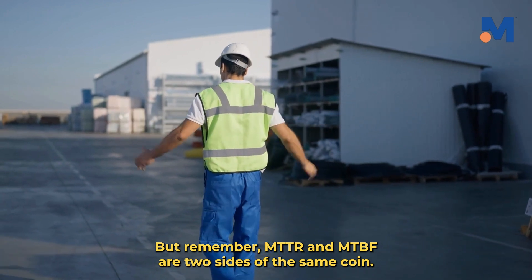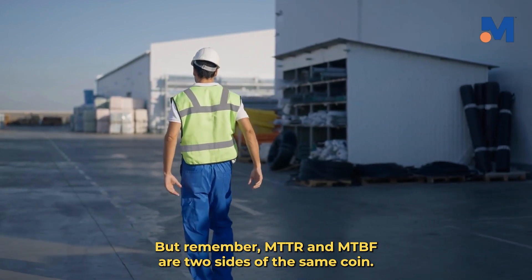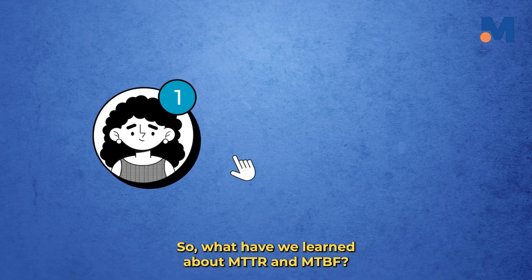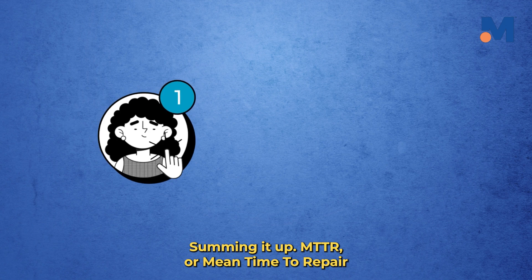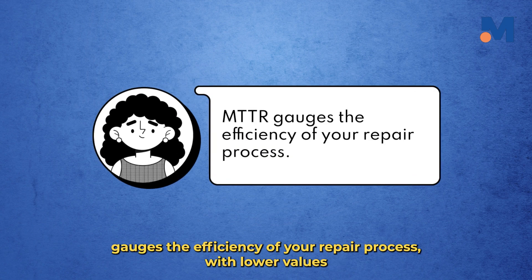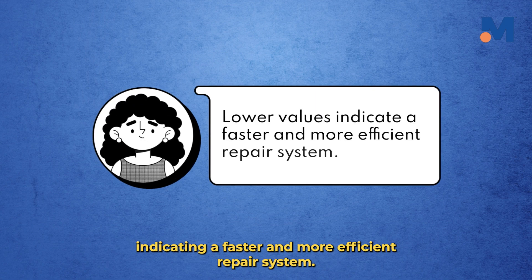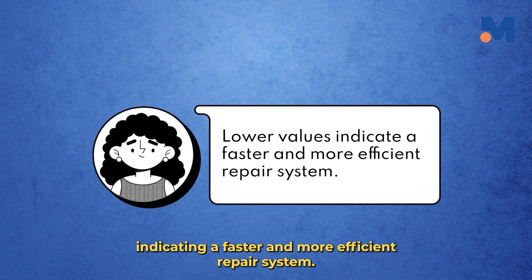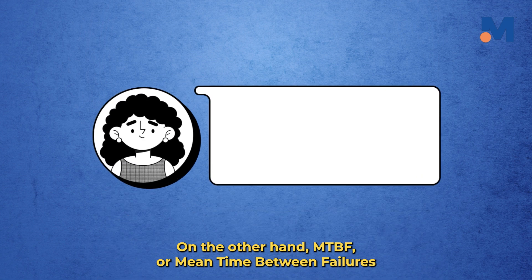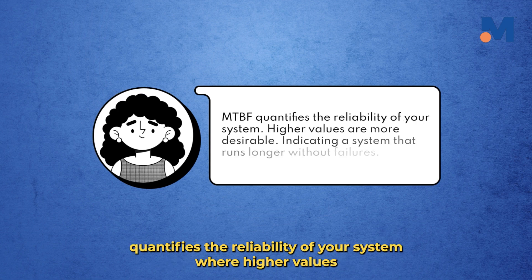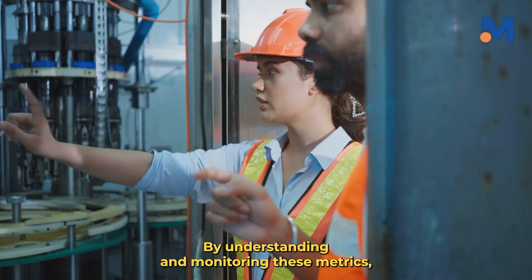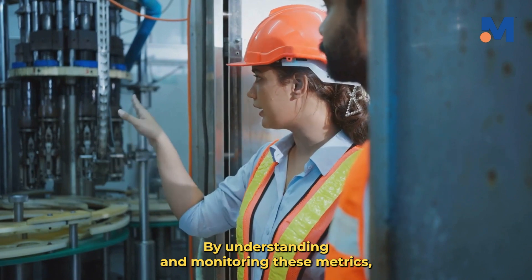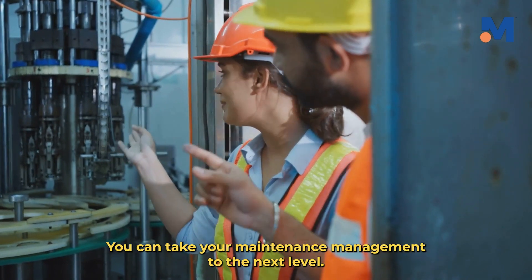Remember, MTTR and MTBF are two sides of the same coin. Summing it up: MTTR, or mean time to repair, gauges the efficiency of your repair process, with lower values indicating a faster and more efficient repair system. On the other hand, MTBF, or mean time between failures, quantifies the reliability of your system, where higher values are more desirable, indicating a system that runs longer without failures. By understanding and monitoring these metrics, you can take your maintenance management to the next level.